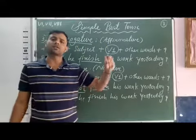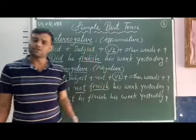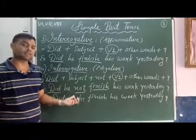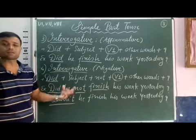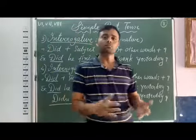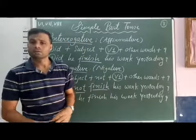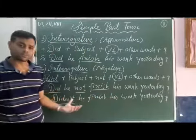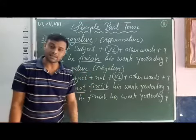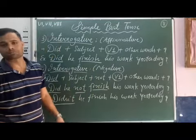In all negative interrogatives of all the tenses, we can use contractions — short forms such as: didn't, doesn't, don't, won't, shan't, wasn't, weren't, isn't, aren't. These can be used for negative interrogative sentences. So both 'Did he not finish his work yesterday?' and 'Didn't he finish his work yesterday?' are correct.